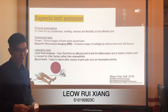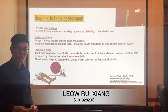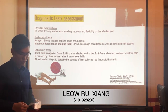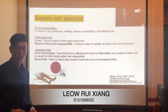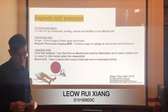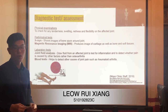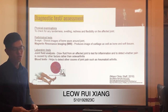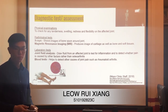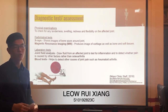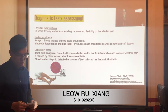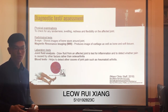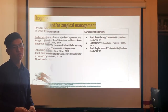Lastly, laboratory tests such as joint fluid analysis — the doctor uses a needle to draw fluid from the affected joint and tests it to detect inflammation and determine whether pain is caused by gout or fracture rather than osteoarthritis. Additionally, blood tests — even though there is no specific blood test for osteoarthritis, it can still detect other causes of joint pain such as rheumatoid arthritis.